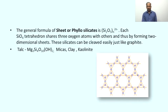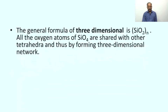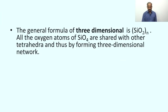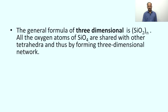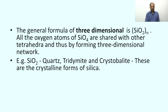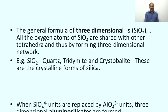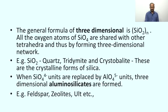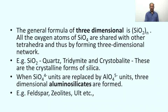Sheet silicates have a two-dimensional sheet structure. The general formula of three-dimensional silicates is (SiO₂)ₙ — all oxygen atoms of the [SiO₄]⁴⁻ units are shared with neighboring units, resulting in a three-dimensional network silicate that is silica itself. Quartz, tridymite, and cristobalite are the crystalline forms of silica. When [SiO₄]⁴⁻ units are replaced by [AlO₄]⁵⁻ units, three-dimensional aluminosilicates are formed; feldspar and zeolites are important aluminosilicates.